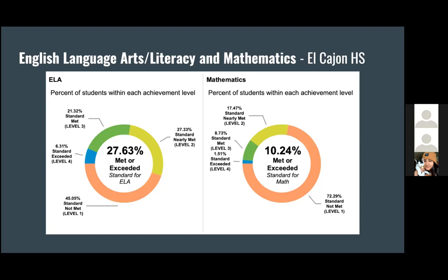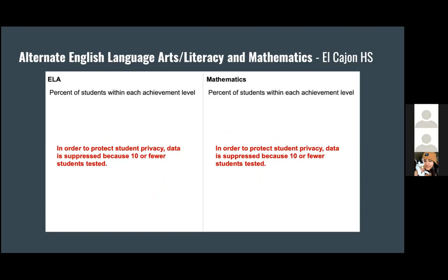For El Cajon, ELA shows 27.63% meeting standard and mathematics being 10.24%, which is a big change compared to Granite Hills. For the alternate assessment for non-native English speakers, we were not able to retrieve this data because of how few students took the test or it just wasn't released. This speaks to the programs available at the school for non-native English speakers and the help they're getting in both English and mathematics, because even at Granite Hills they were still scoring high numbers, whereas at El Cajon there weren't enough students to even compile the data.